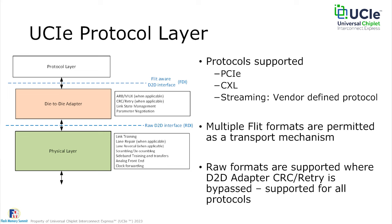The adapter interfaces to the logical physical layer using the raw die-to-die interface (RDI). The physical layer takes care of things like link training, lane repair for advanced packages, lane reversal, scrambling, de-scrambling, sideband initialization, training and transfers, as well as the analog front end and clock forwarding circuitry for the link.